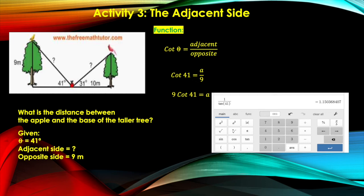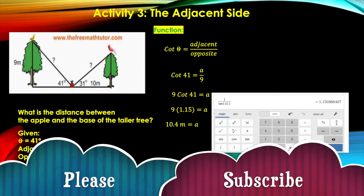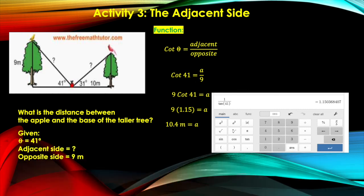So let me use two decimal places again. So this would look like 9 parenthesis 1.15 equals A. And then finally, when we multiply 9 by 1.15, approximately, the distance between the apple and the base of the taller tree is 10.4 meters, which represents the adjacent side of the bigger right triangle in the diagram.